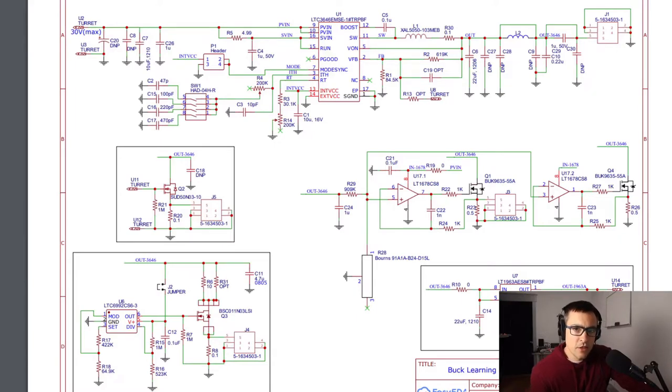Before discussing the details of the transient response, let's go over the schematic for the test board. At the top of the screen is the LTC3646-1 circuit, which will be our device under test. I chose it because it has a number of external configuration options. I can set the light load mode, the compensation externally, and the switching frequency.